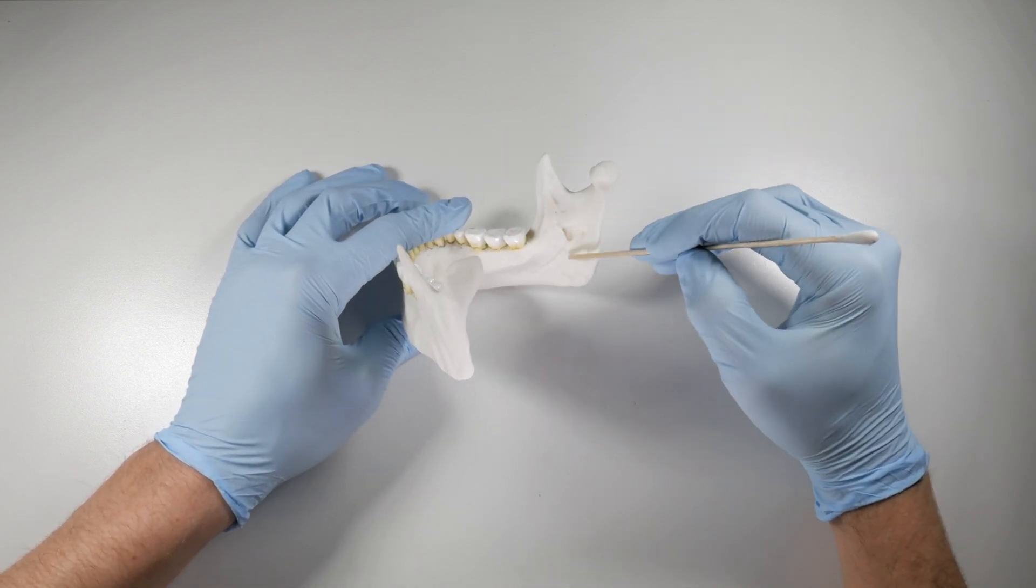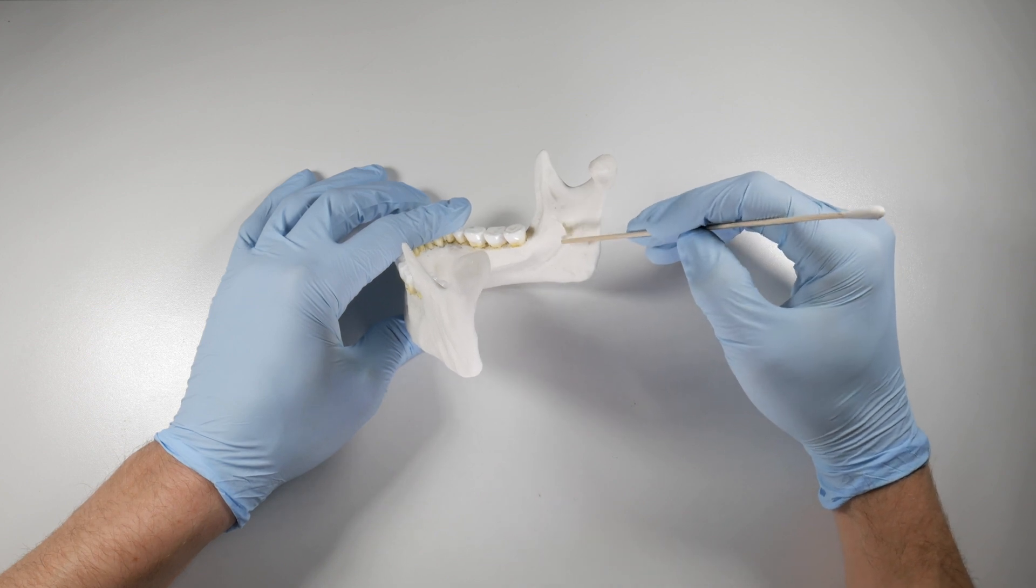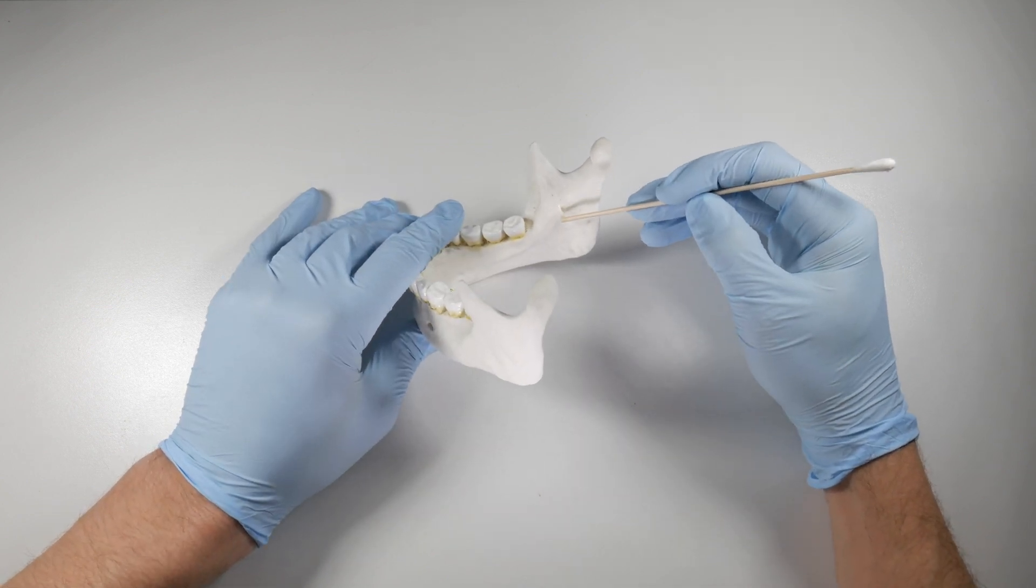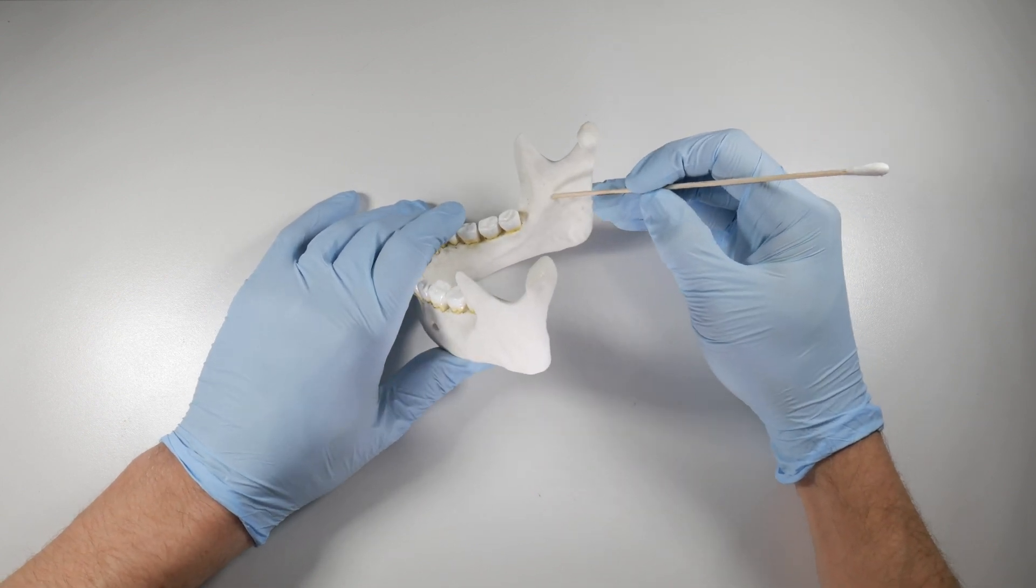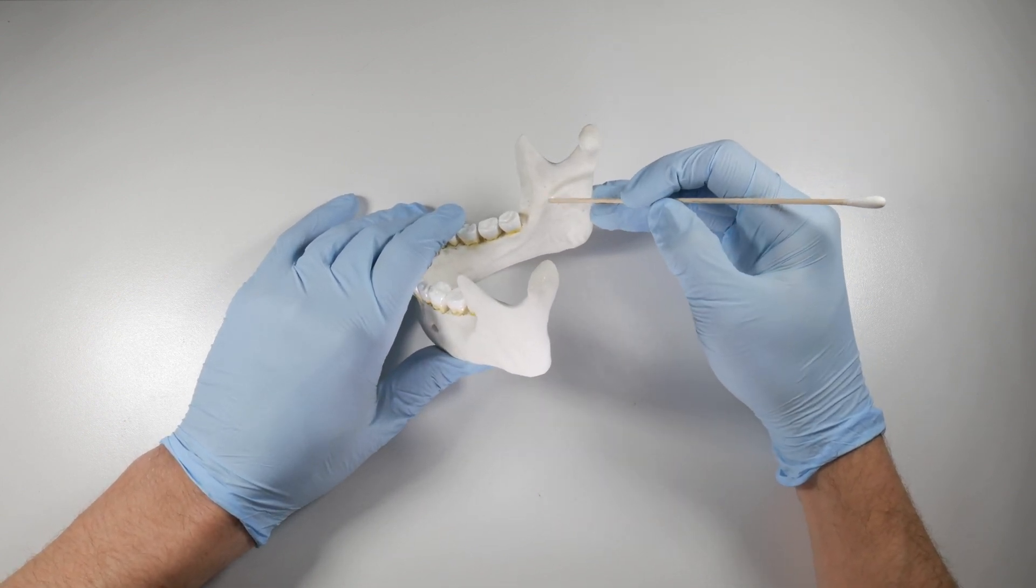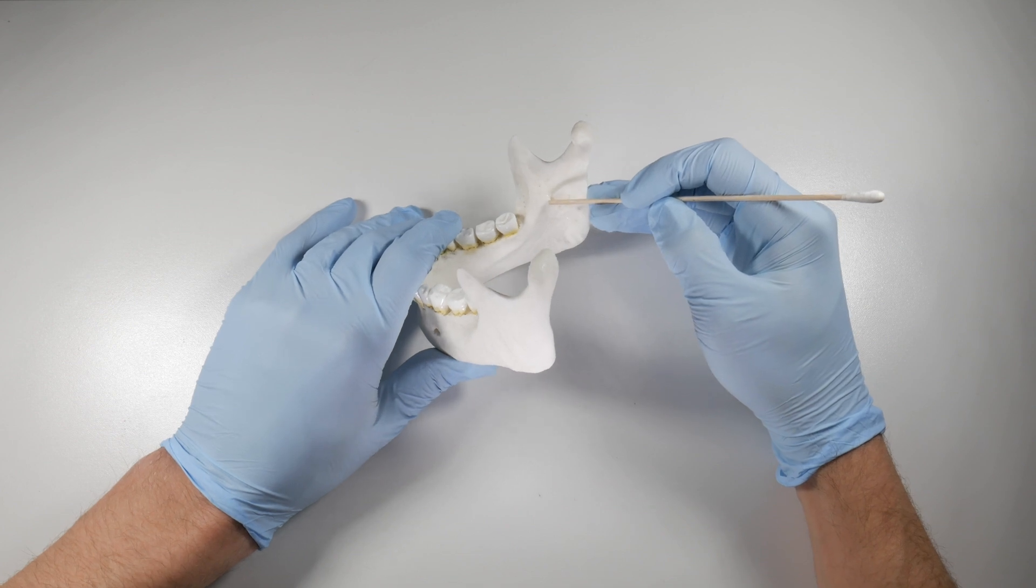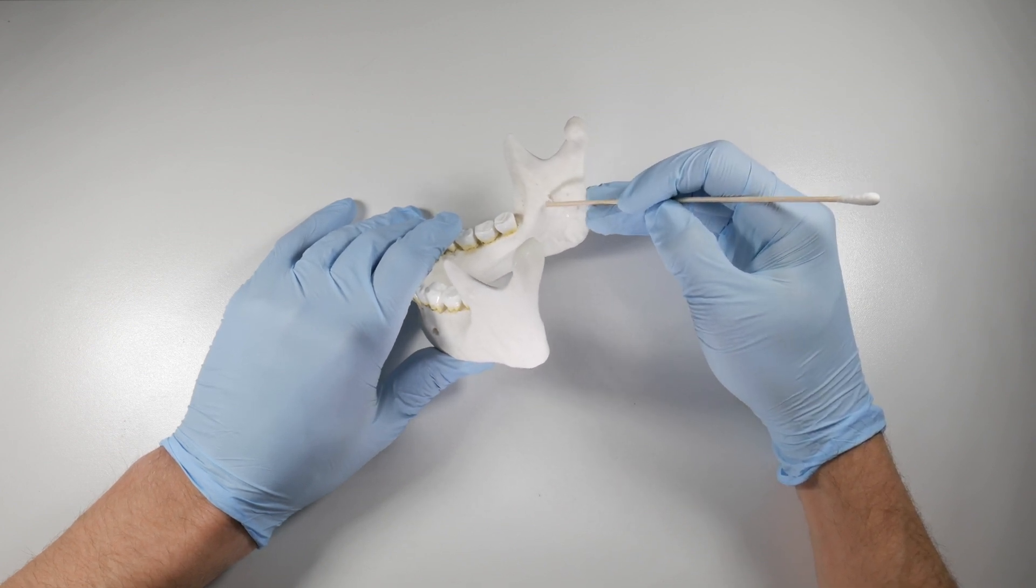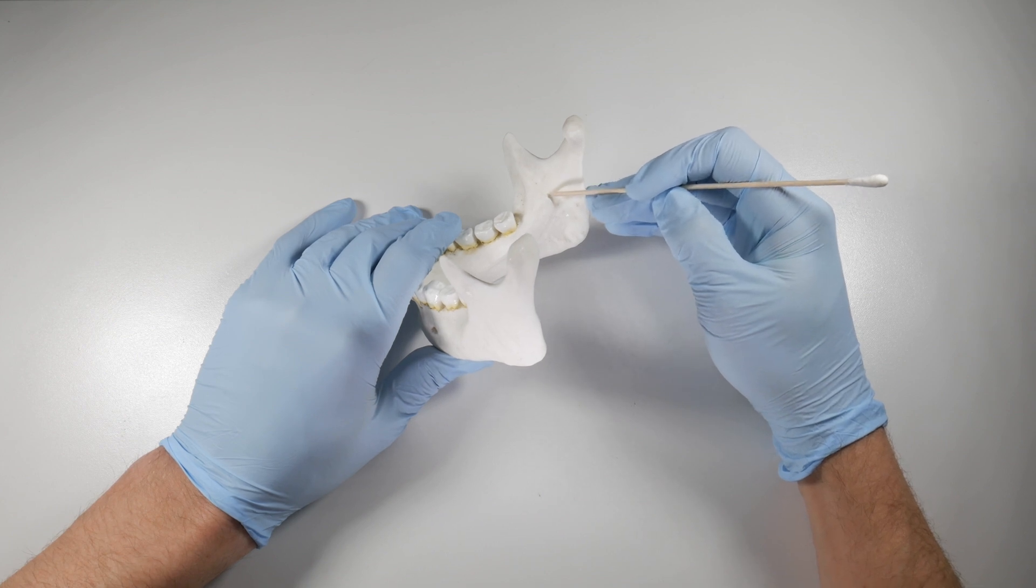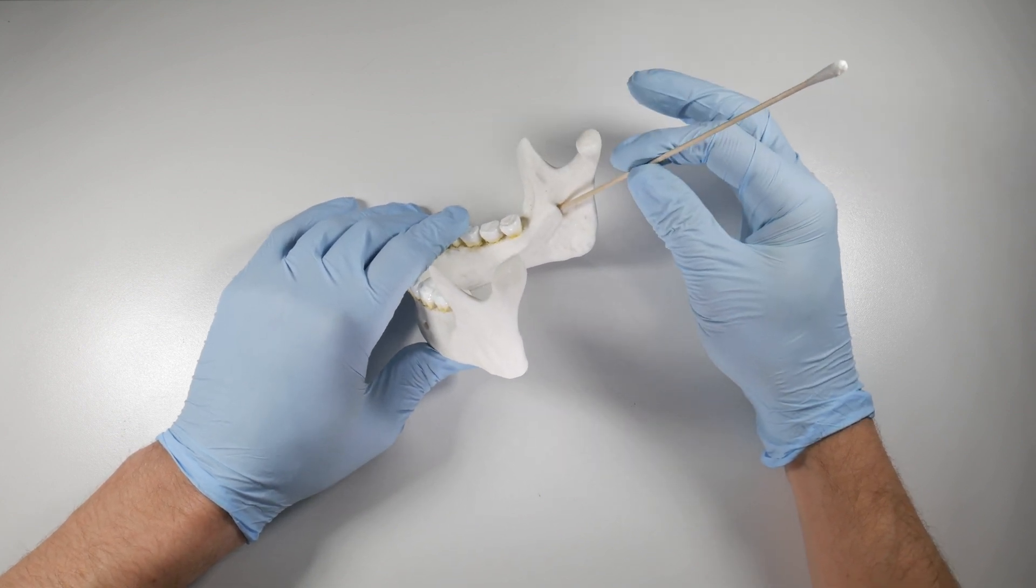The lingula is this little bony projection that we'll see covering the mandibular foramen, and this is typically our target site for the mandibular block. We're aiming just superior and slightly posterior to this foramen and above this lingula to try to get anesthetic to enter the foramen and block the nerve.